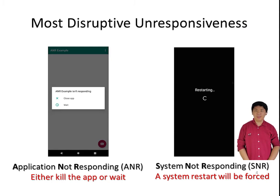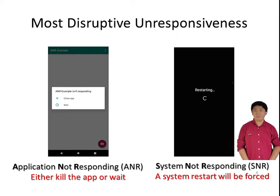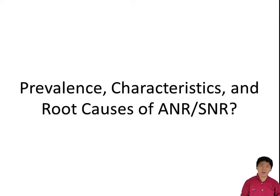Among all kinds of unresponsiveness, Application Not Responding, or ANR, and System Not Responding, or SNR, are the most disruptive. Both are triggered when a response timeout occurs to an app or system thread. When an ANR occurs, a system dialogue is displayed asking users to either continue waiting or kill the app. If an SNR happens, even the system itself will be forced to restart. Unfortunately, to date we know little about ANR and SNR's prevalence, characteristics, and root causes due to a lack of large-scale measurement and analysis on real-world smartphone usage. This hinders the community's practices toward bettering user experiences.